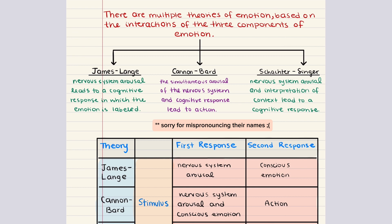James believed that when peripheral organs receive information and respond, that response is labeled as an emotion by the brain. For example, a car cutting you off on the highway is a stimulus for elevated heart rate, blood pressure, and increased skin temperature. These physiological responses result in the cognitive labeling of anger: 'I must be angry because my skin is hot and my blood pressure is high.' This theory predicts that individuals who cannot mount a sympathetic response, like patients with spinal cord injuries, should show decreased levels of emotion — however, further studies have proven this claim to be false.